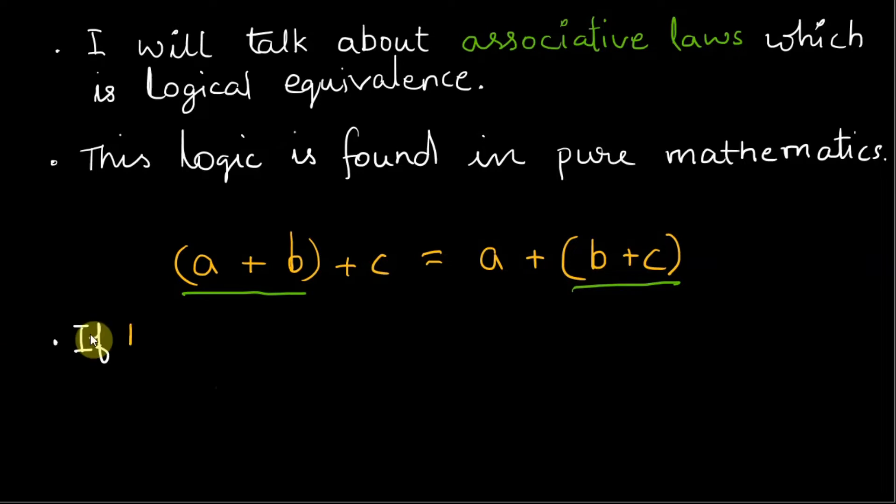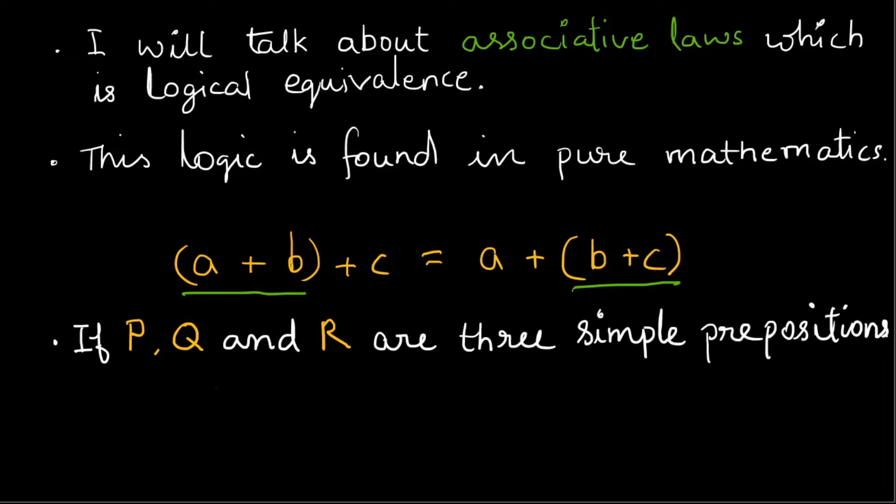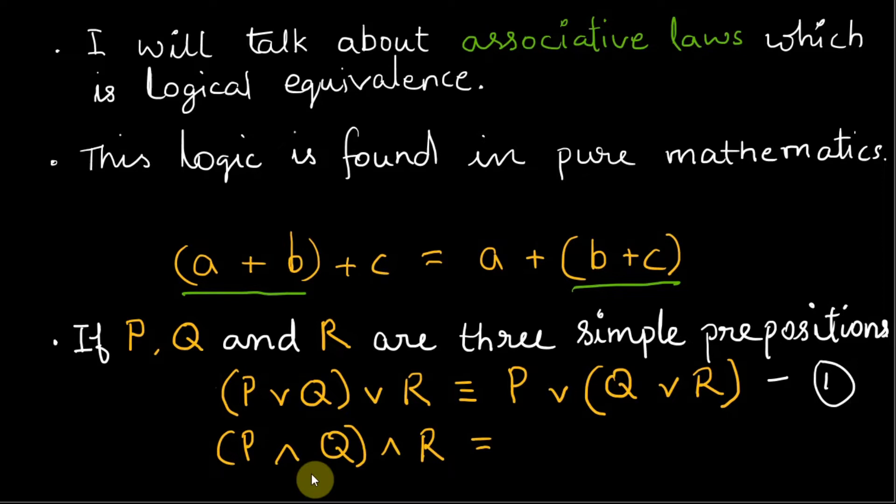Based on this fact, if p, q, and r are three simple propositions, then the associative laws are: p or q or r is equivalent to p or q or r, and p and q and r is equivalent to p and q and r.